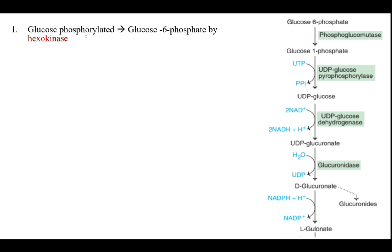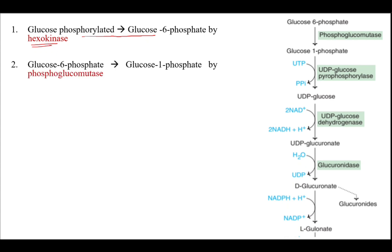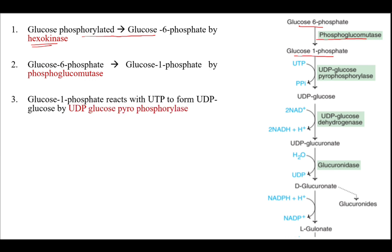Firstly, glucose is phosphorylated to glucose-6-phosphate by the enzyme hexokinase. Then glucose-6-phosphate is converted to glucose-1-phosphate by phosphoglucomutase. This glucose-1-phosphate reacts with UTP in the presence of UDP-glucose pyrophosphorylase to form UDP-glucose.